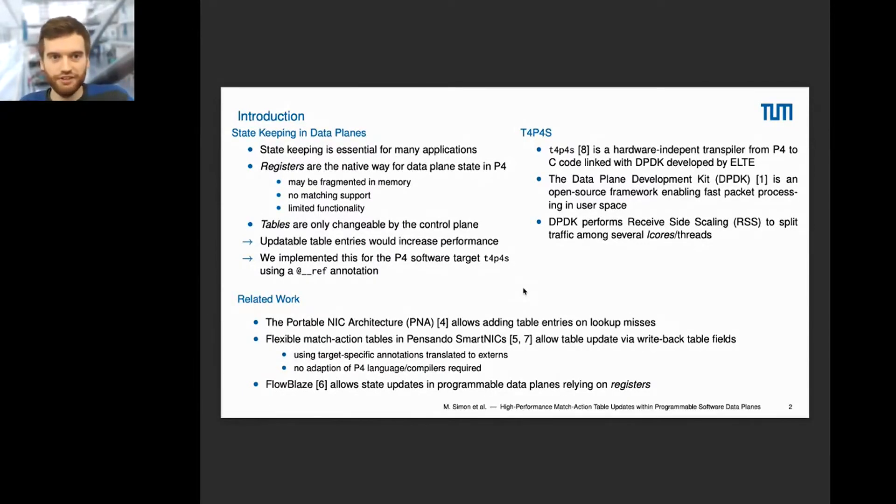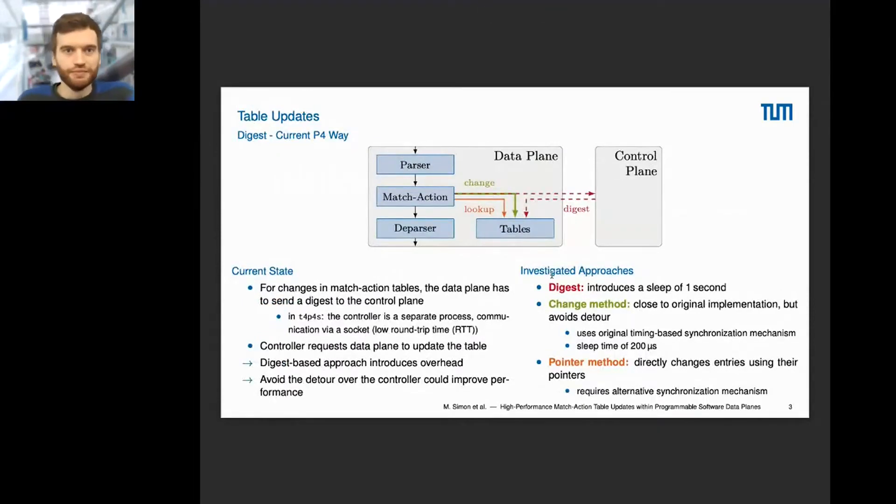Just as an overview, in software-defined networking we have the data and control plane as a split architecture. In TAPAS, these two are different processes running asynchronously and can exchange messages through Unix sockets. If a packet comes into the pipeline, it is first parsed, then some match-action is performed, and at the end it's deparsed and sent out. During this match-action, lookups can be performed to the table and then the headers are matched and specific actions are executed.